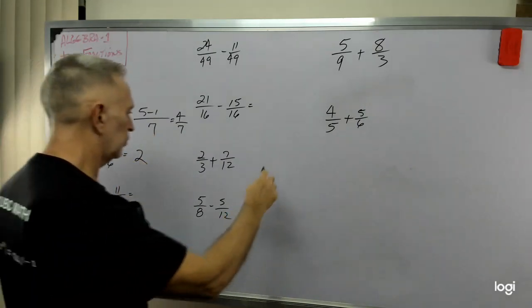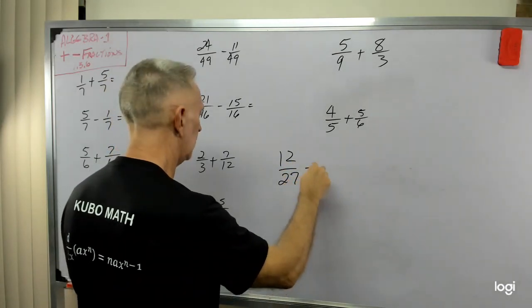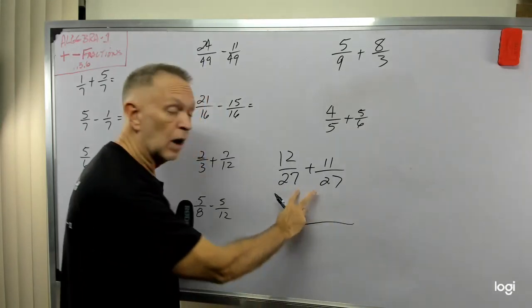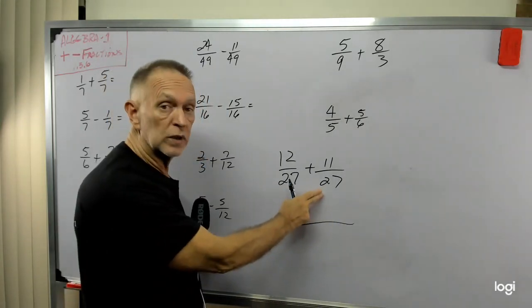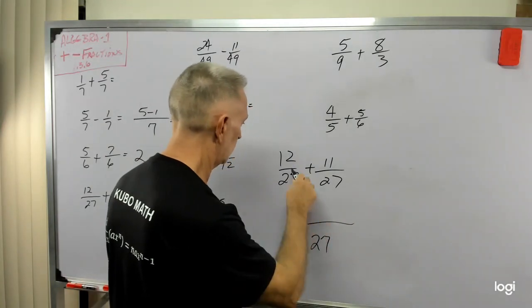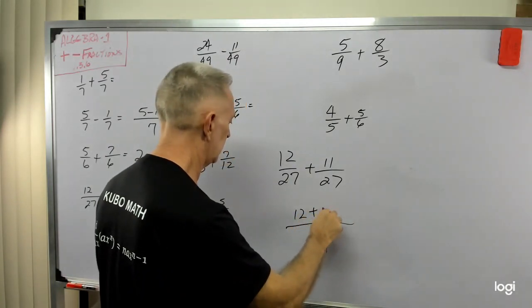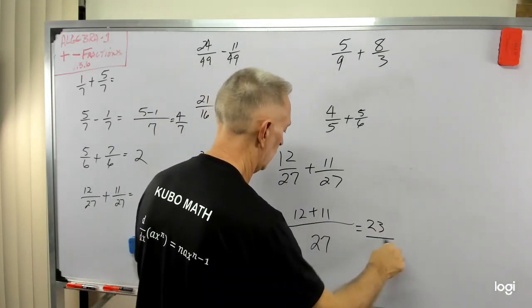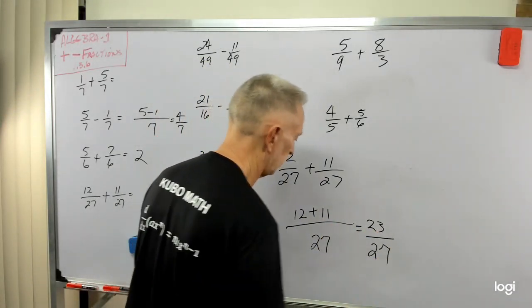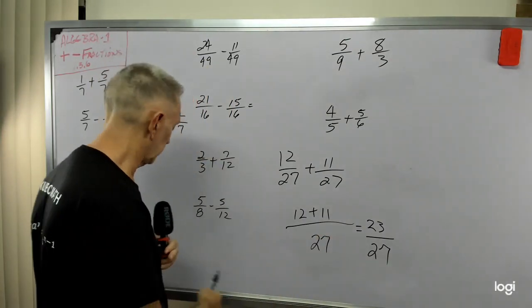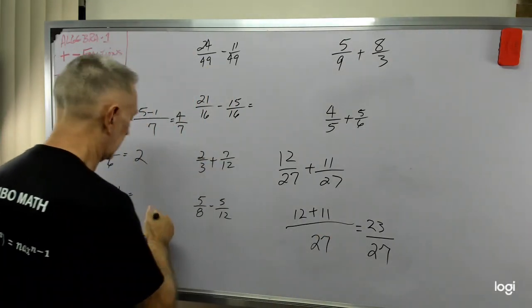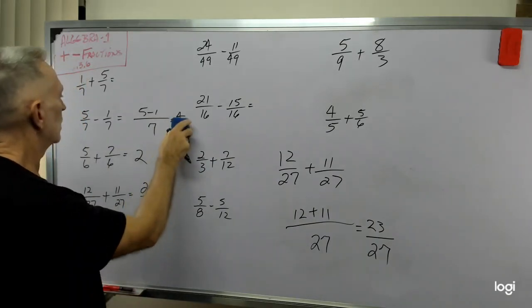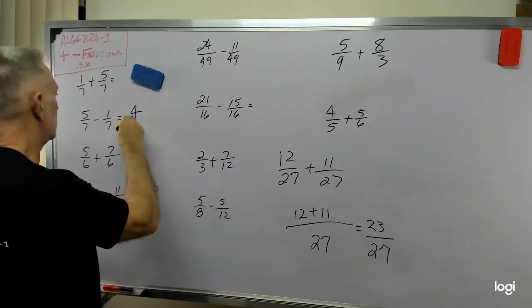What about this one? 12 over 27 plus 11 over 27. So my common denominator is 27. 12 plus 11. That's 23 over 27. 23 is a prime number, so no reduction I can do there. 23 over 27. So this was 4 over 7. I'll clean this up a little bit.